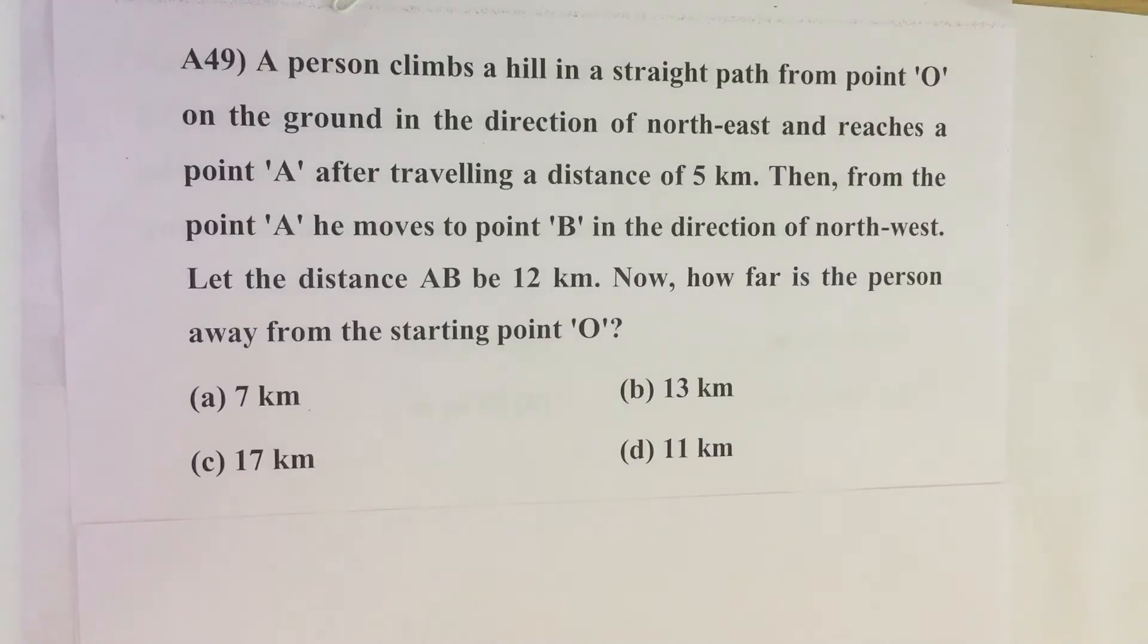A person climbs a hill in a straight path from point O on the ground in the direction of northeast and reaches a point A after traveling a distance of 5 km. Then from point A he moves to point B in the direction of northwest. Let the distance AB be 12 km. Now how far is the person away from the starting point O?